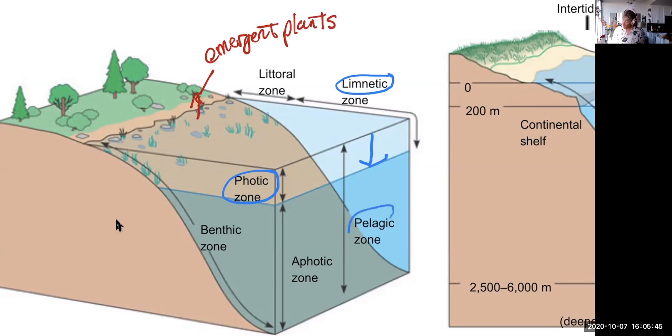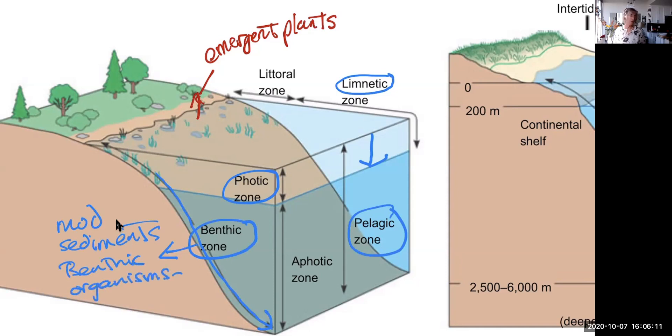So generally, the pelagic zone is the area that's not the benthic zone. The benthic zone is the bottom of a lake or an ocean. That's where there's generally mud, sediments, and benthic organisms. In particular, many different kinds of insect larvae. And in some cases, salamanders as well, and different kinds of animals.